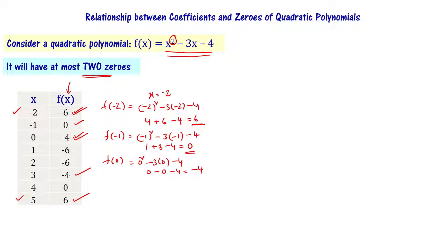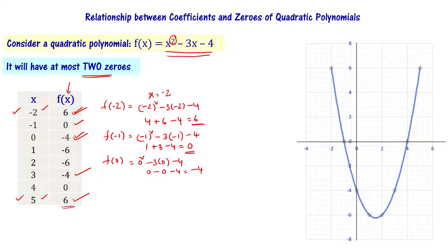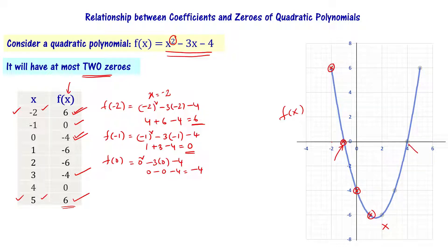We select x values from minus 2 to 5 and note the f of x values in a table. Now you plot this — the horizontal axis is x and the vertical axis is f of x. When you plot the points from the table and draw the curve, it crosses the x-axis at certain points.